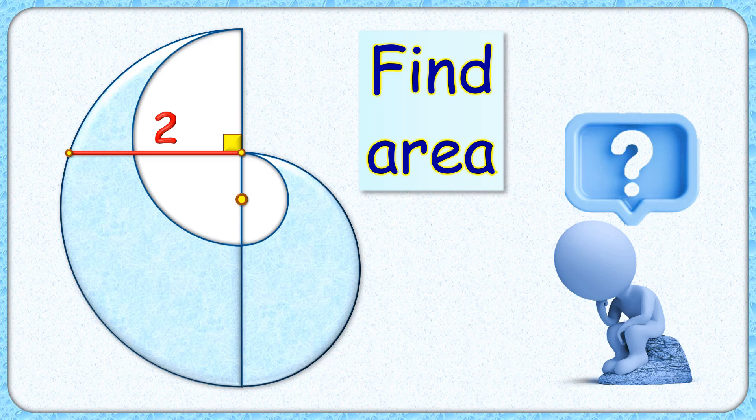Welcome to this interesting question which is made up of 4 semicircles, 2 blue semicircles and 2 white semicircles of different size. The smallest white circle and the biggest blue semicircle are sharing the common center and the length of this red line segment is 2 cm. With this limited data we have to find the area of this blue shaded region.